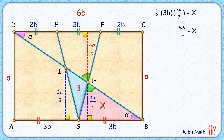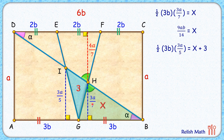Now looking at triangle IGB, the green triangle, its area equals half of base GB times height, where height is 3a/5. So area = (1/2) × 3b × 3a/5 = 9ab/10. The area of this green triangle is x plus 3, so 9ab/10 = x + 3.